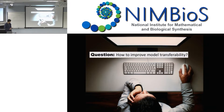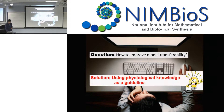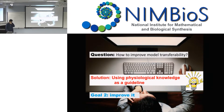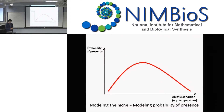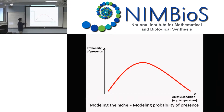So how do we improve such model transferability? The idea I have is to use physiological knowledge as a guideline to help the model make predictions. Essentially, modeling the niche is modeling the response curve. The x-axis can be an environmental condition, and ideally the y-axis would be the probability of presence.